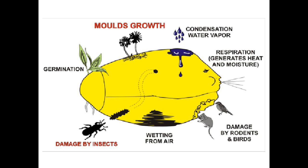Grain losses may occur by mold growth, condensation of water vapor, respiration of grains, damage by rodents or birds, wetting from air, infestation by insects, or there may be a chance of germination. These are some of the key points regarding losses of grains in storage.